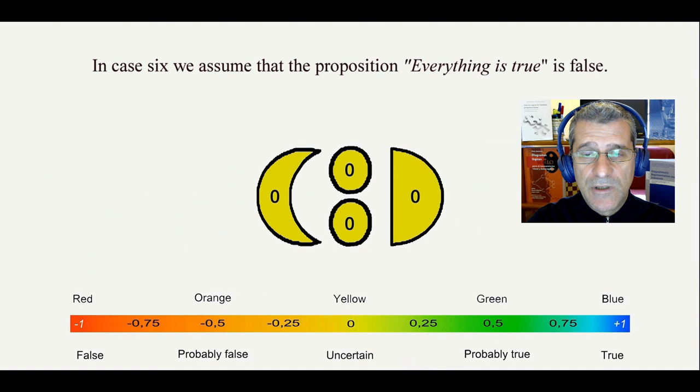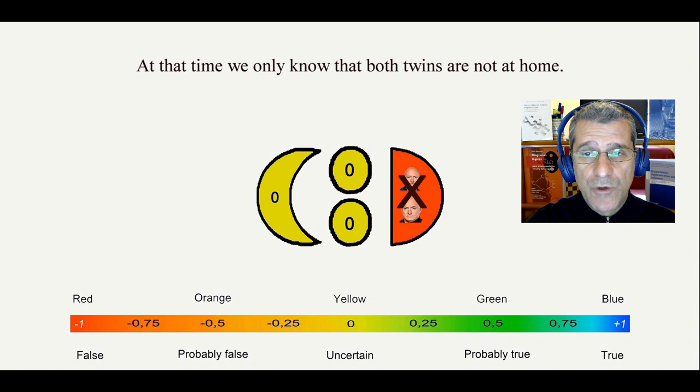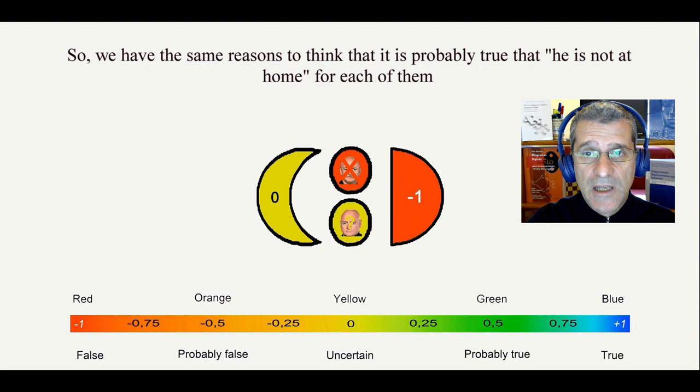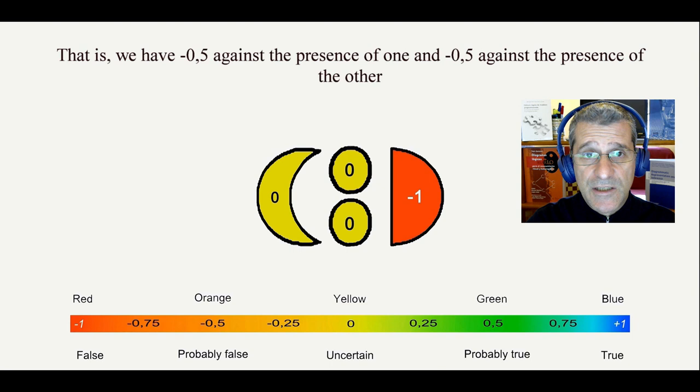So, we have the same reason to think that it is probably true that he is not at home for each of them. That is, we have minus 0.5 against the presence of one and minus 0.5 against the presence of the other.